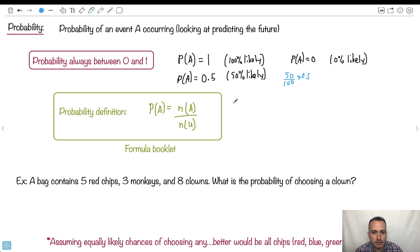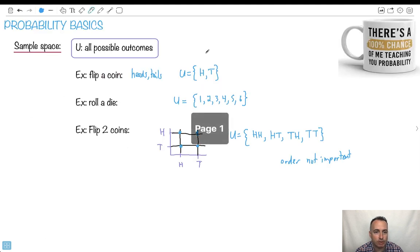What does this mean? This n means the number of outcomes in A - the number of different ways that A can occur. Whereas this right here is the total number of outcomes. Why do we say U? Because U is the sample space - all the different choices.